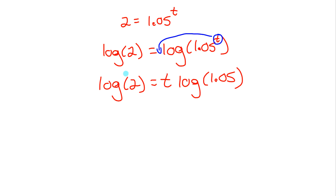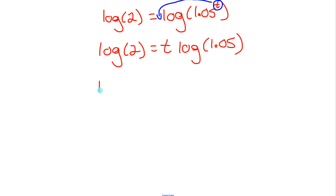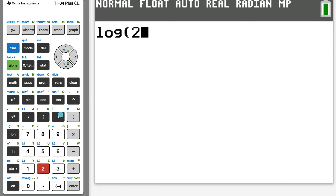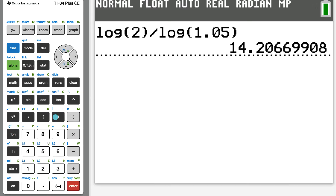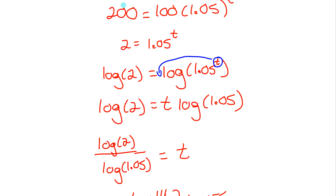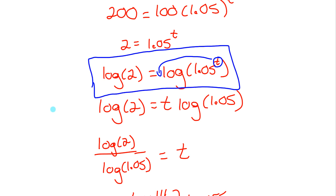Using this power law is useful because it solves the problem of having the unknown in an exponent — it's now out of the exponent and is a coefficient of a log. Since log of 2 and log of 1.05 are just numbers, we can divide both sides by log of 1.05. That gives us t equals log of 2 divided by log of 1.05. Evaluating on a calculator gives approximately 14.2 years — in 14.2 years the amount will have doubled from 100 to 200.